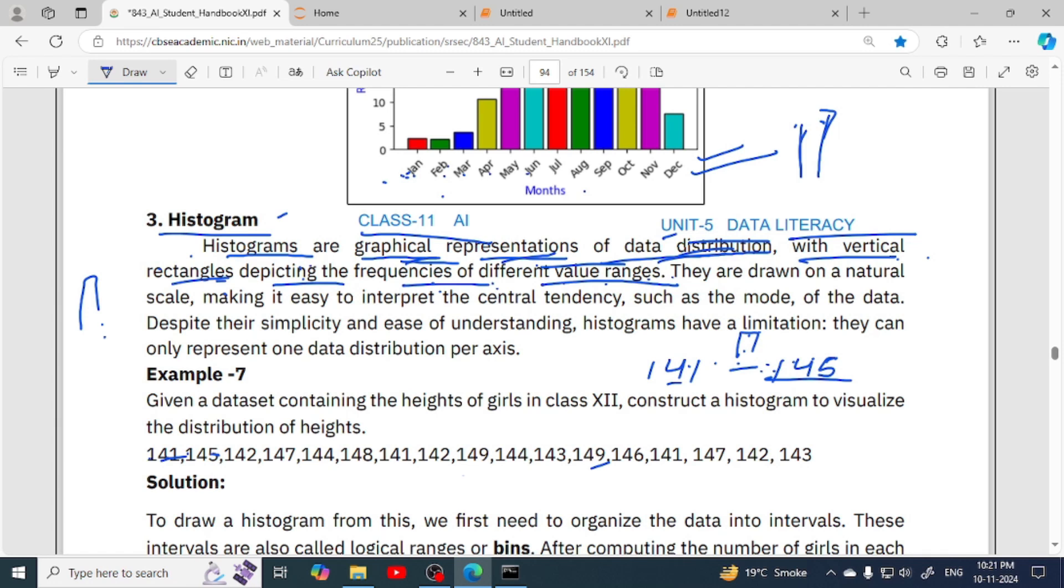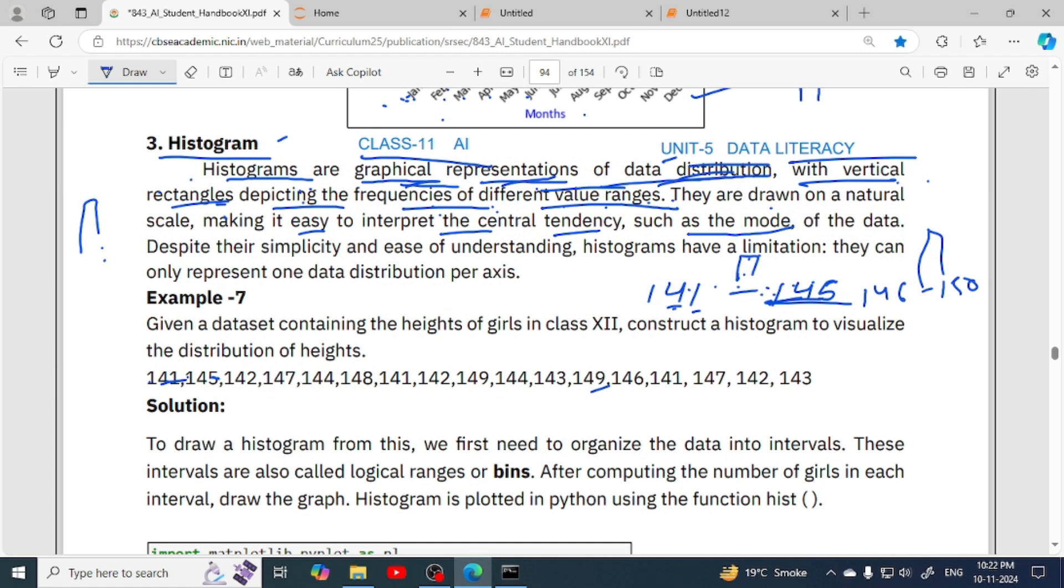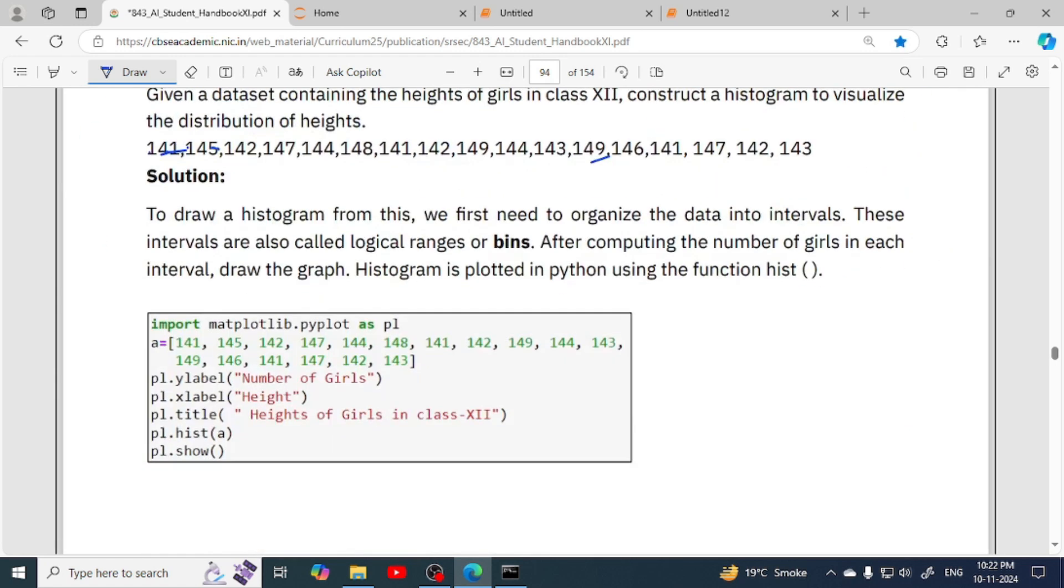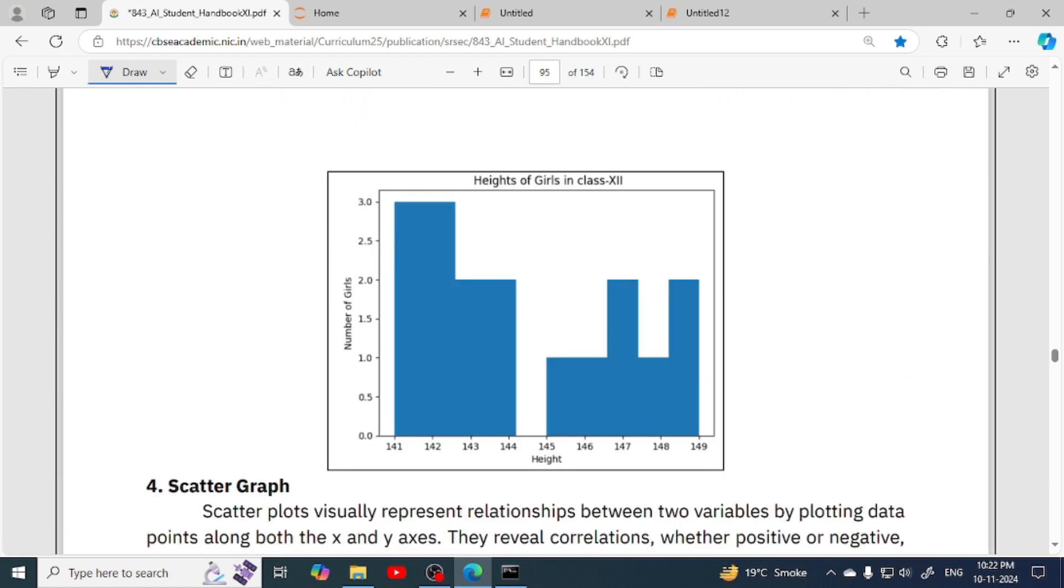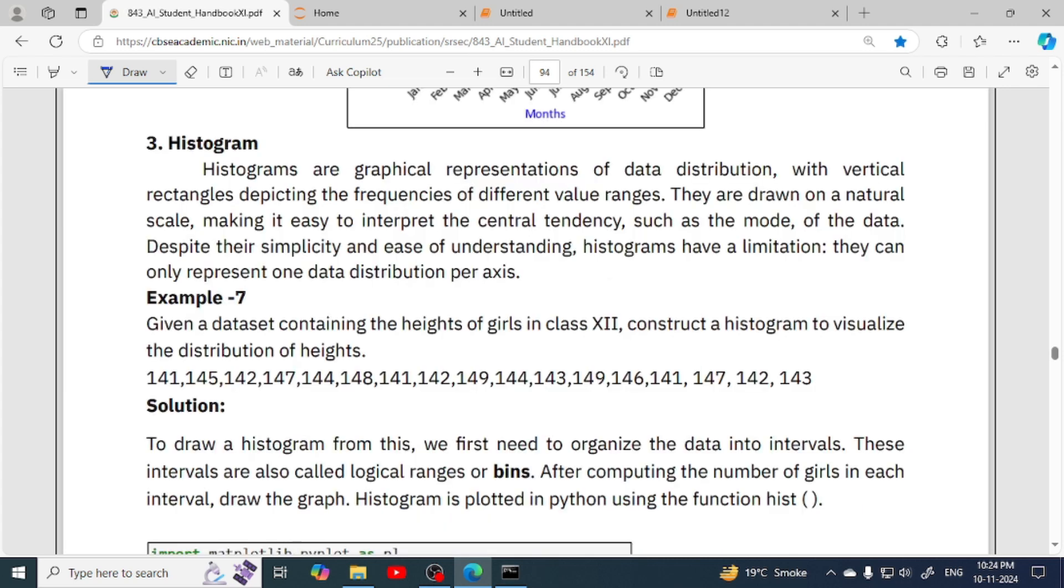In histogram we show the frequency of different intervals. They are drawn on a natural scale, making it easy to interpret the central tendency such as mode. For example, 141 to 145 range has how many products, similarly 146 to 150 range has how many, then we can easily find the mode of the data by seeing the height of the bars. For example, here 141 data has the highest frequency, the height of this bar is highest, so we can see that the mode will be 141.